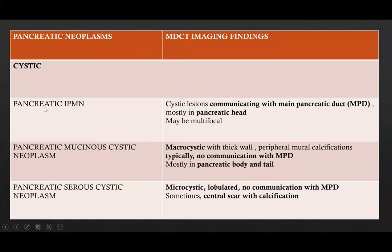In the cystic pancreatic neoplasms: pancreatic IPMN presents as a cystic lesion which communicates with the MPD, mostly located in the pancreatic head, and may be multifocal. Pancreatic mucinous cystic neoplasms present as macrocystic masses with thick walls and peripheral eggshell calcifications, typically showing no communication with the MPD, mostly located in the pancreatic body and tail. Pancreatic serous cystic neoplasms present as microcystic lobulated masses with no communication with the MPD; sometimes they show a central scar with calcification, allowing for a more specific diagnosis.